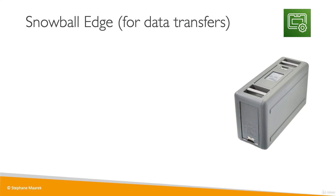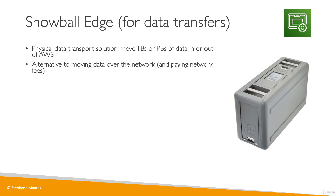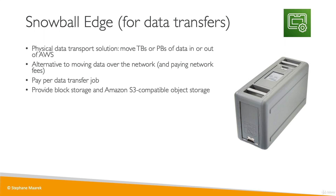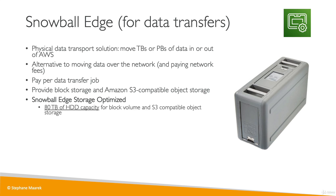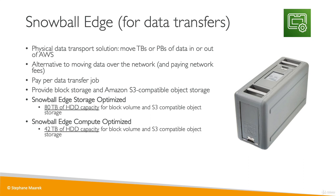The Snowball Edge is a huge box used to move terabytes or petabytes of data in and out of AWS. It's an alternative to moving data over the network, and you pay per data transfer job. The interface provides block storage or Amazon S3-compatible object storage. There are two flavors: Snowball Edge storage optimized, which gives 80 terabytes of hardware disk capacity for block volume or S3-compatible object storage, and Snowball Edge compute optimized, which gives 42 terabytes of HDD capacity. Use cases include large data cloud migration, decommissioning a data center, or disaster recovery.